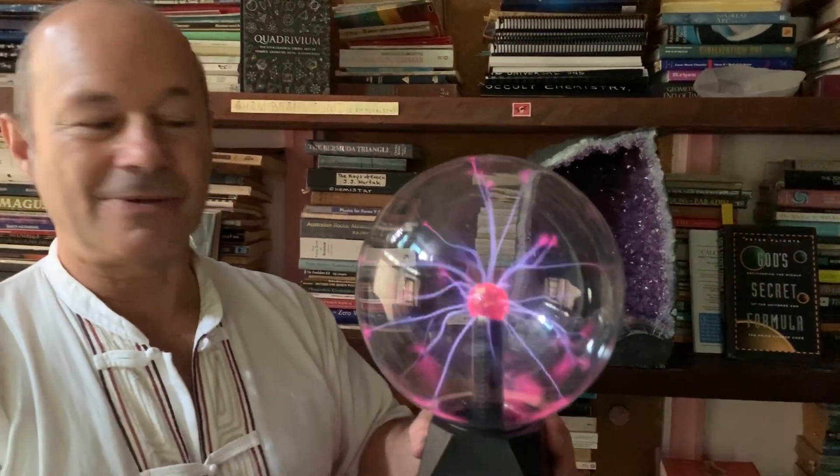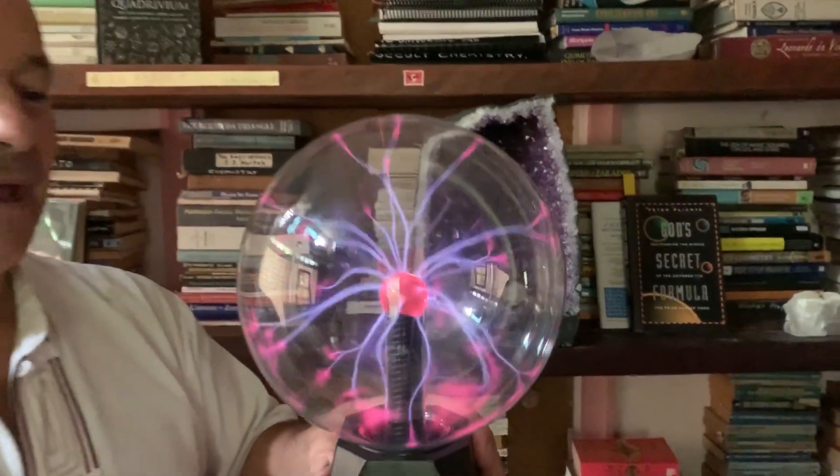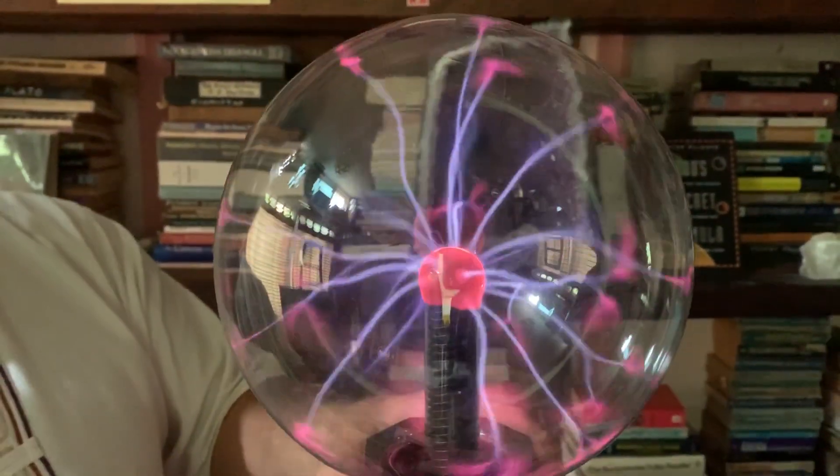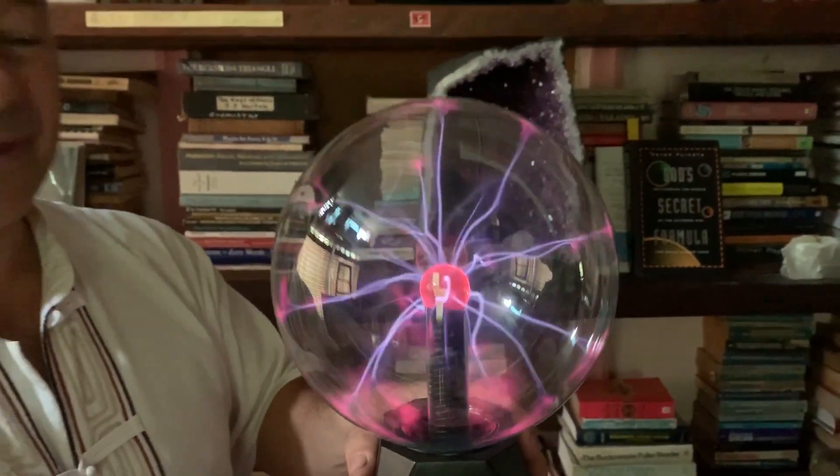I'm holding here what is called a plasma lamp. It's a bedside lamp that children love having near their bed. And what you're seeing here is these amazing rays of energy literally coming out of the ether.